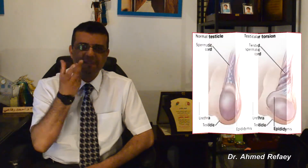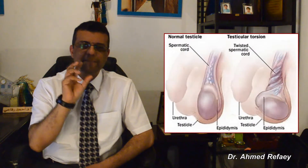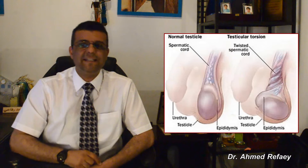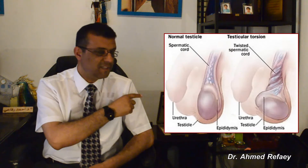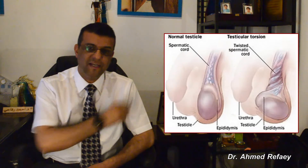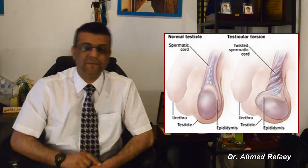Starting with testicular torsion, which is spontaneous in 95% of cases and preceded by trauma in 5% of cases. Testicular torsion occurs when a testicle twists on the spermatic cord, resulting in cutting off of blood supply, as seen in this drawing.